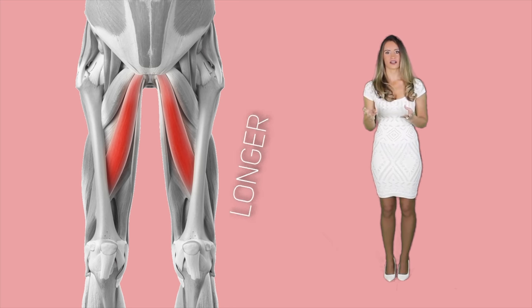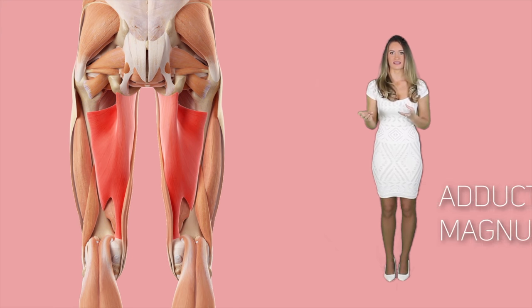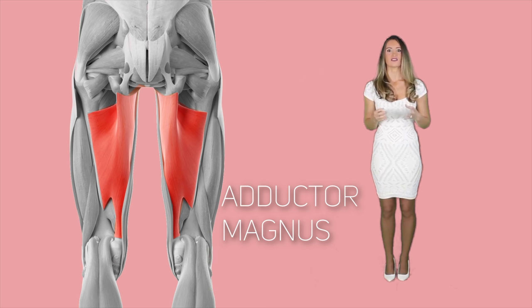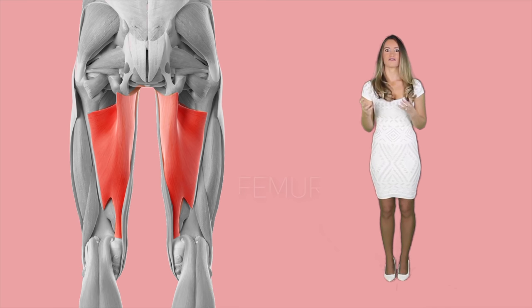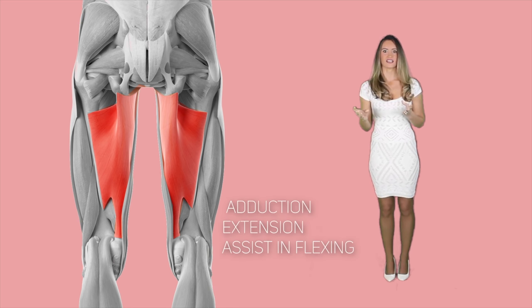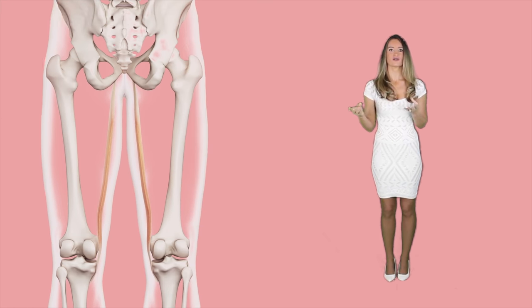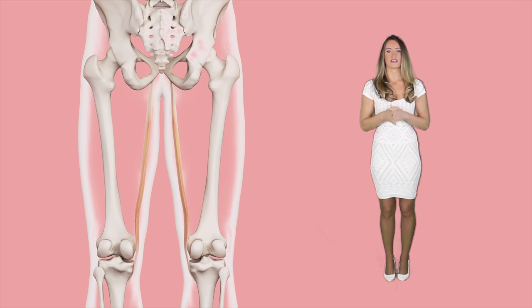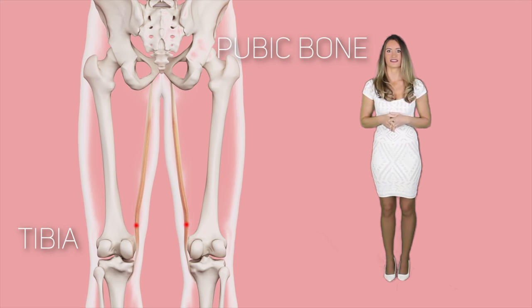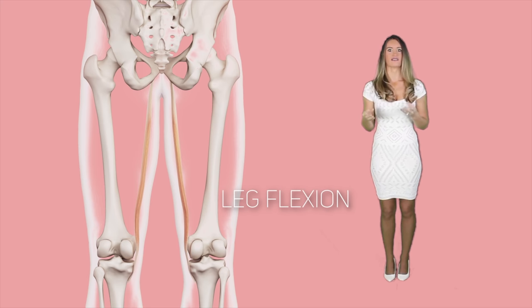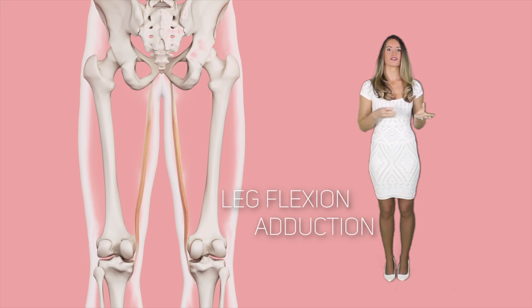Adductor longus is the third muscle and is functionally and anatomically similar to the adductor brevis, except that it's a little longer. The fourth muscle is the adductor magnus, the longest of the adductors. It is also triangular shaped and links the femur with the ischium. It is involved in thigh abduction, extension, and assists in flexing. Gracilis is the last thigh adductor — a long strap-like muscle linking the tibia with the pubic bone, involved in leg flexion at the knee and adduction of the thigh.